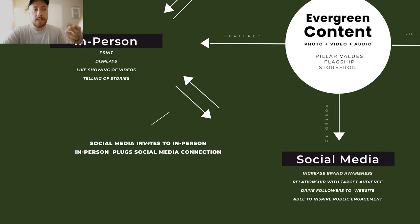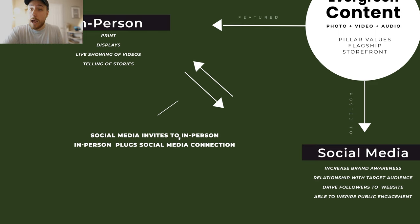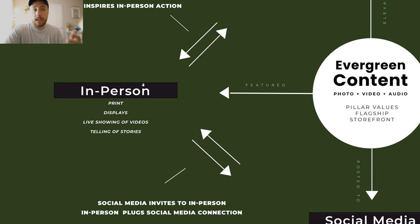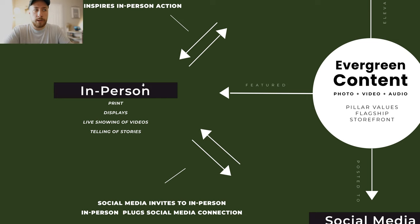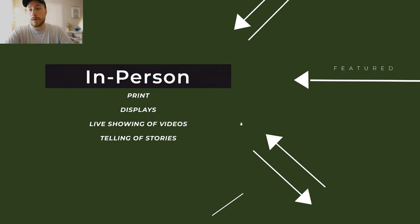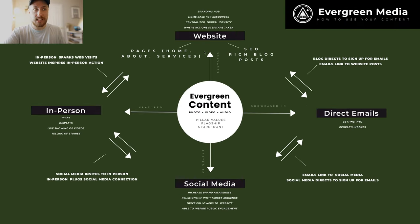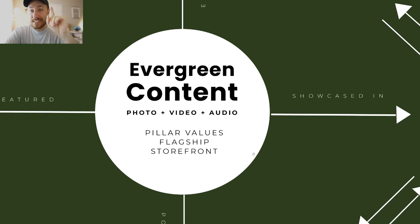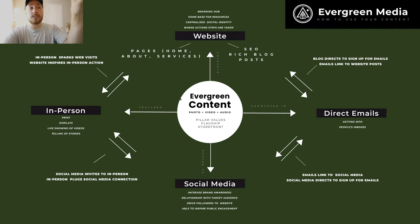Social media also invites people to in-person events, conferences, or gatherings that you might be holding. Your in-person events plug your social media connection as well as your website, helping people take greater action steps when they visit your site after meeting you in person. Evergreen content can also be used in-person — whether you're holding a fundraising event or conferences — with great displays of infographics, live showings of videos you've produced, or testimonial stories. So not just on your website, email list, and social media, but also in person. This whole map is built so that everything references itself, pointing to each other, using one single piece of content in a myriad of ways.